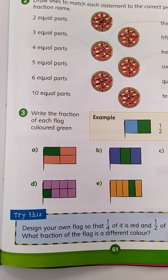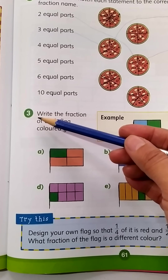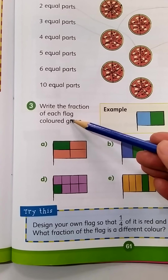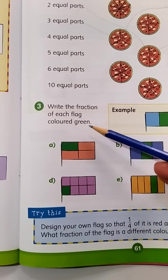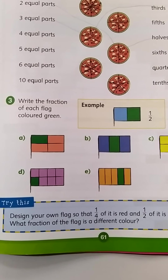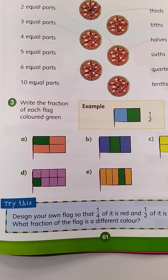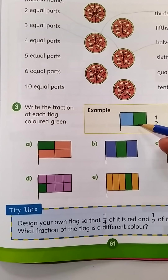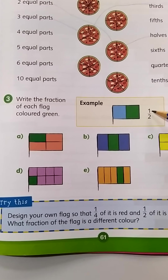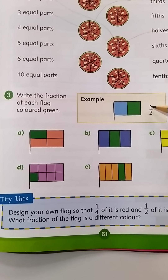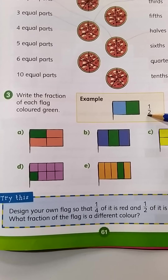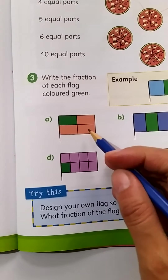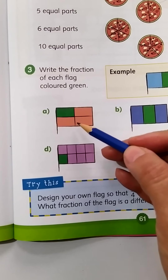Okay, now let's move to question number three: write the fraction of each flag colored green. So what you are going to do is make a fraction. You are big boys and girls now — you can make your own fractions. These are two parts and it is called halves: one over two, because only one part is green.